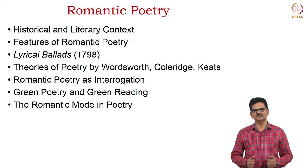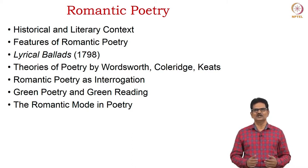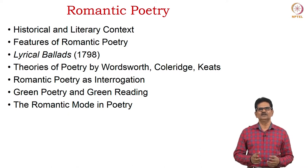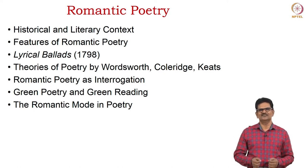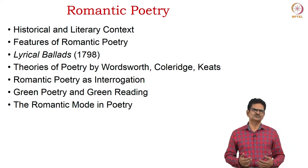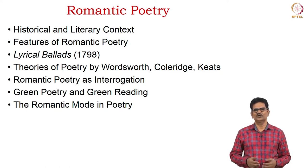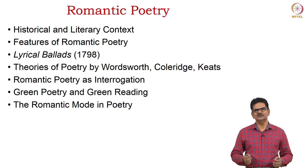Then we will consider certain features of Romantic poetry which may be found in many of these poets. Most importantly, we will see the role of the publication of Lyrical Ballads in bringing about this movement. Then we will see some of the theories of poetry offered by Wordsworth and Coleridge, and particularly one aspect of interrogation — that is, questioning — as a spirit of Romantic poetry. We will also look at green poetry and the concept of Romantic mode in poetry, specifically with reference to a critic called Josephine Miles.